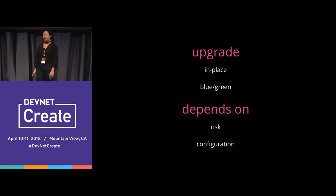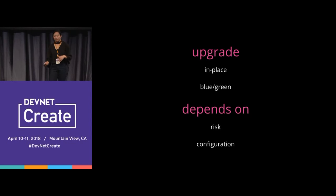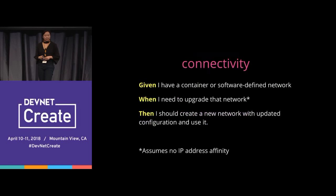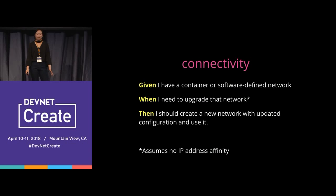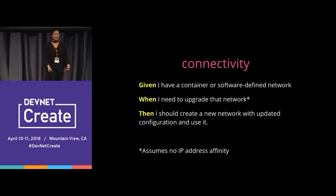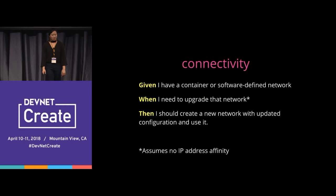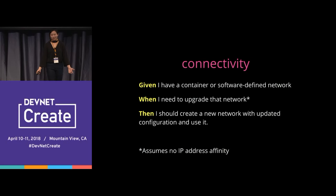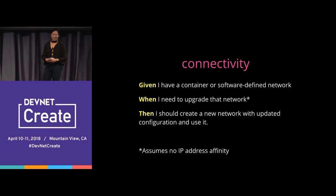When I first presented blue-green for networks, a lot of network engineers thought I was crazy. But it's more of a reality now that we have software-defined networking and more control. In the connectivity space: given I have a container or software-defined network, when I need to upgrade that network, then I should create a new network with updated configuration and use it. One caveat: it assumes no IP address affinity, which is why container and software-defined networking works well for it — you should not be assuming a static IP address on a container or software-defined network.